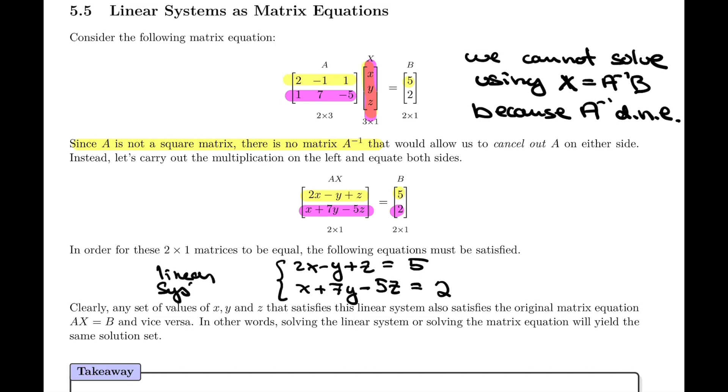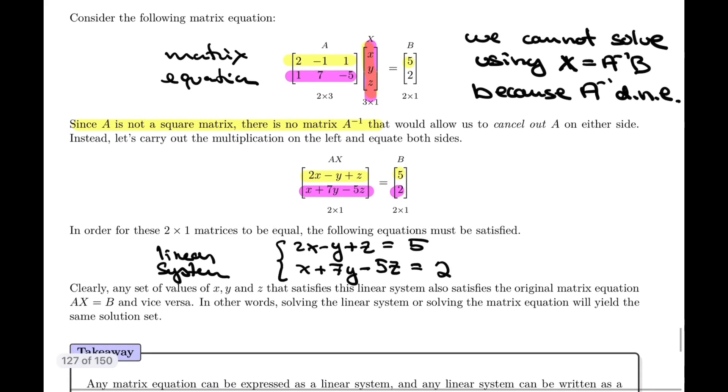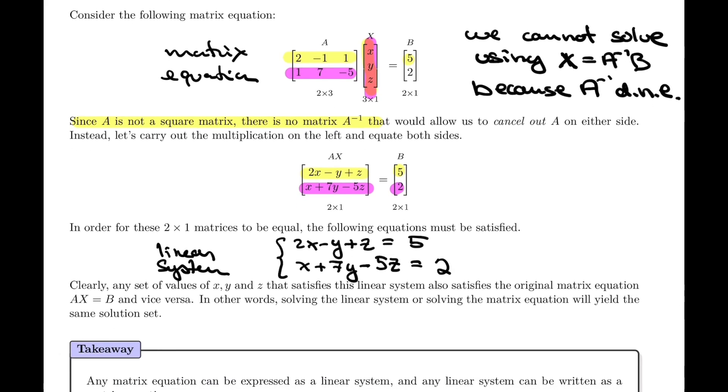And this is a linear system. So we started out with a matrix equation and we rewrote it as a linear system. It's not very hard to convince ourselves that the same set of values that satisfy the linear system will also satisfy the original matrix equation, and vice versa. We went from one to the other, and so it's pretty sure that the values that satisfy the equations of the system also satisfy the matrix equation.